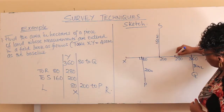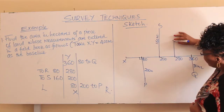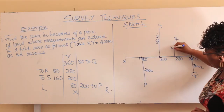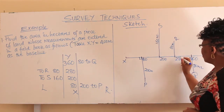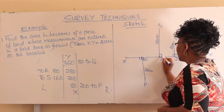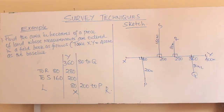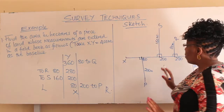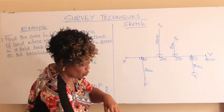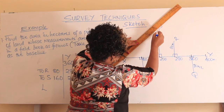At 280 it's like half of the previous — 80 meters. An offset up to point R. Remember all these offsets meet perpendicularly with the baseline. So from there, you complete your sketch by joining these points.